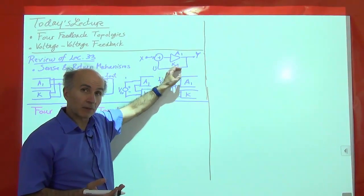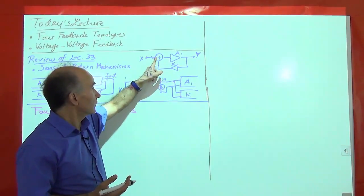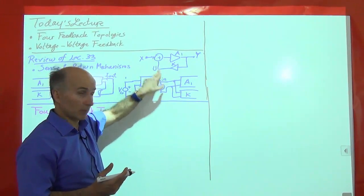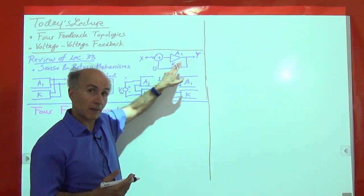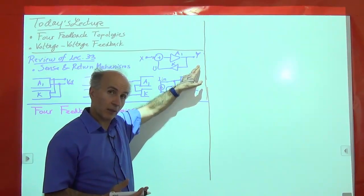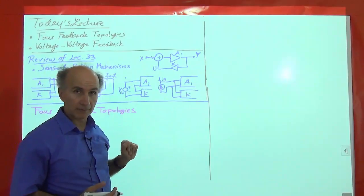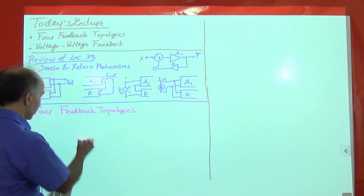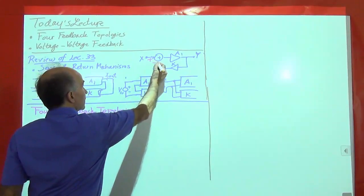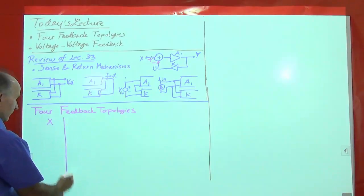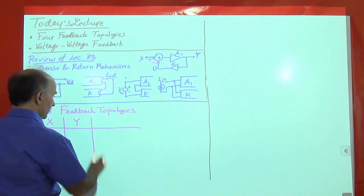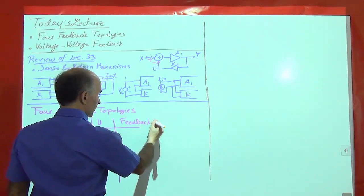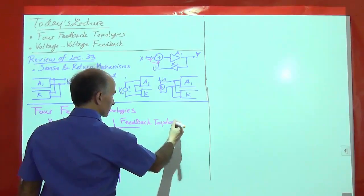It could also be that the input is a current quantity and the output is a voltage, giving a different topology. We'll make a table with columns X, Y, U, and feedback topology. If X is a voltage, Y is a voltage, then U must also be a voltage (since U is subtracted from X, they must have the same dimension). This is called voltage-voltage feedback. The first term refers to what we are sensing at the output; the second refers to what we are returning to the input.